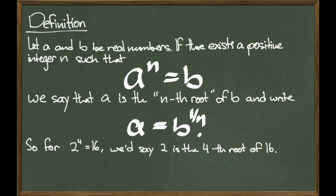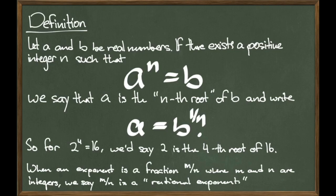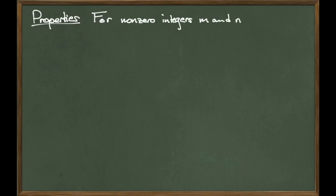We already know that if a number is taken to an integer power, we call that power an integer exponent. However, when an exponent is a fraction, say m over n, where m and n are integers, we say that m over n is a rational exponent — so 1 over n would be a rational exponent, for example. We'll certainly go through some examples, but let's look at some properties of rational exponents. Let m and n be non-zero integers, and we get the following properties.